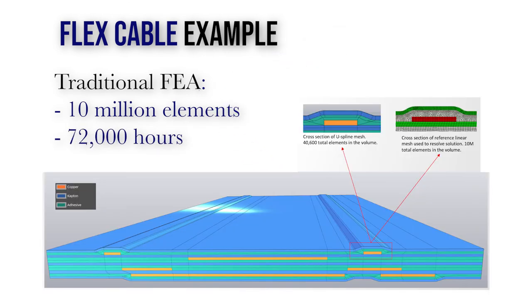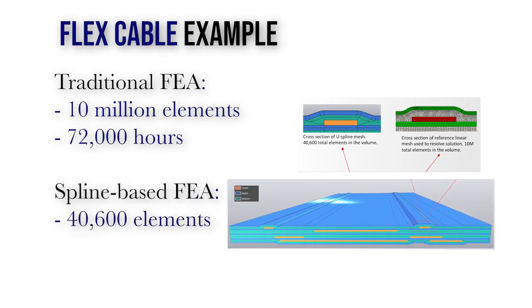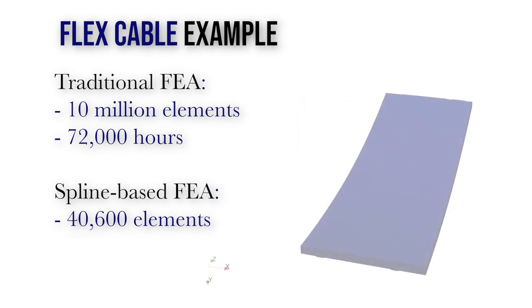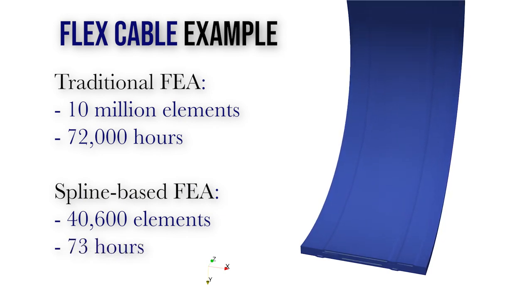Compare that to the Spline-Based Model. It had 40,000 elements, so 250 times less, since splines do not lose accuracy when thinned out, and they can happily have T-junctions. So the simulation was done in 73 hours instead of 72,000 hours.